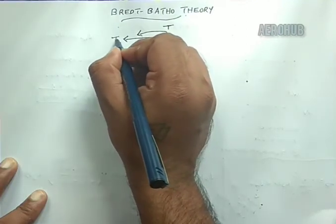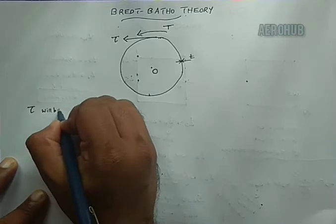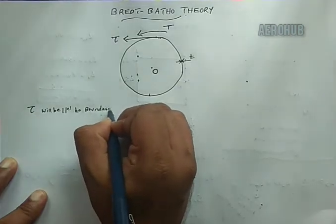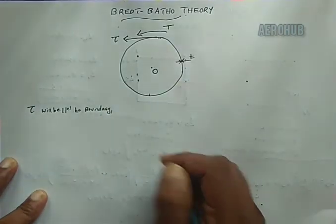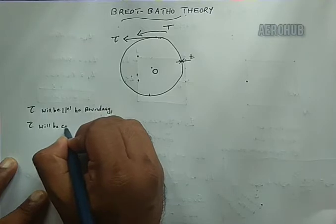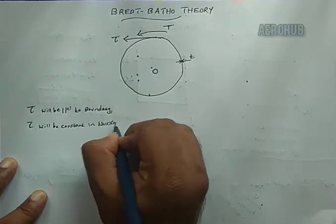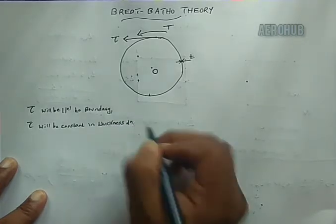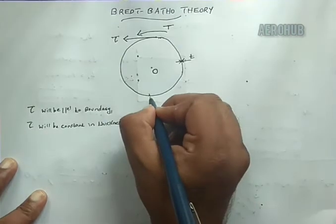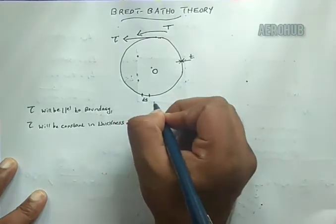The shear stress tau will be parallel to the boundary. Since the thickness is very small, the shear stress will be constant in the thickness direction. Now I will take a small element ds — an element of length ds along the section.